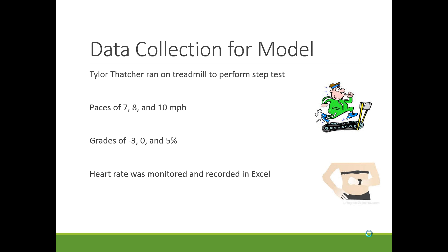First, we needed to get a model for heart rate and how it was affected by two inputs: pace and percent grade. Tyler Thatcher ran on a treadmill with a heart rate monitor to collect the data we needed. He ran at three different paces — 7, 8, and 10 miles per hour — and three different grades: minus 3, 0, and 5%. Once collected, the data was put into Excel and graphed, serving as our step test for the two inputs.